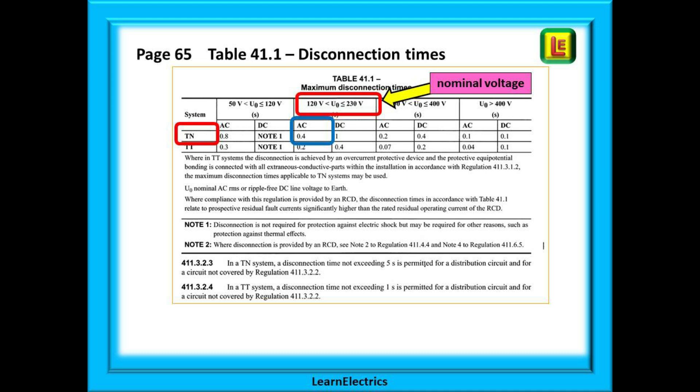Let's assume that our circuit is a final circuit and it is below the amp limits specified. Table 41.1 on page 65 will tell us the maximum disconnection time for safety for different nominal voltages and different earthing systems. Nominal voltage is what we call the voltage, not what we actually measure. This means that in a household kitchen we call the nominal voltage 230 volts and that is what we use for all of our calculations even if we measure 240 volts or 250 volts.